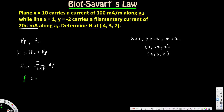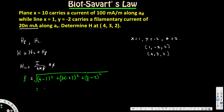The ρ value is the square root of (4-1)² + (3-(-2))² + (2-2)². That gives us √(9 + 25 + 0) = √34. So ρ = √34.